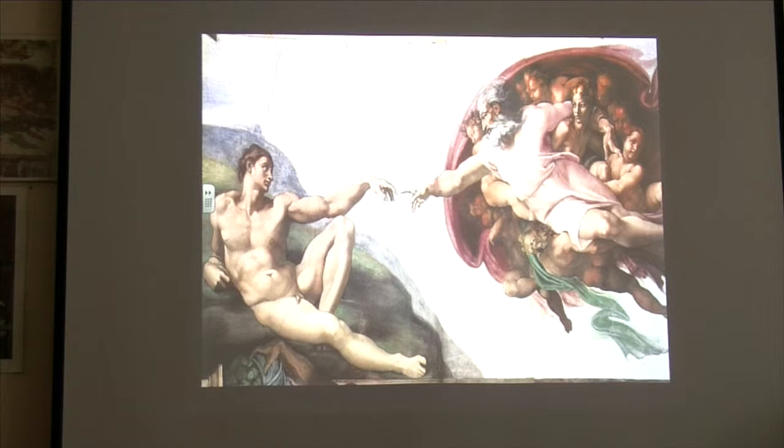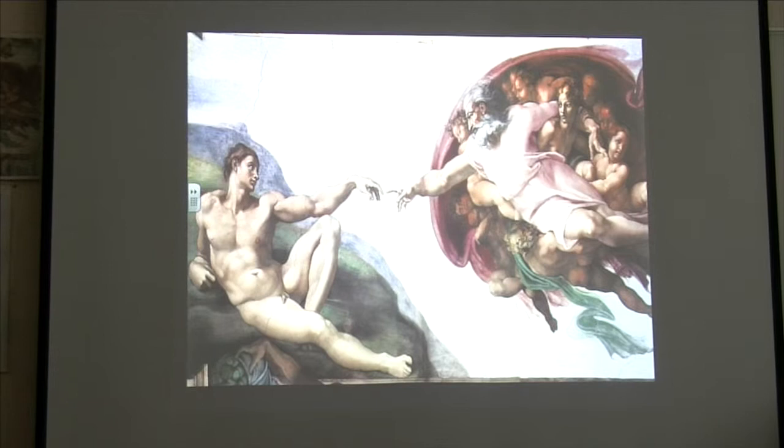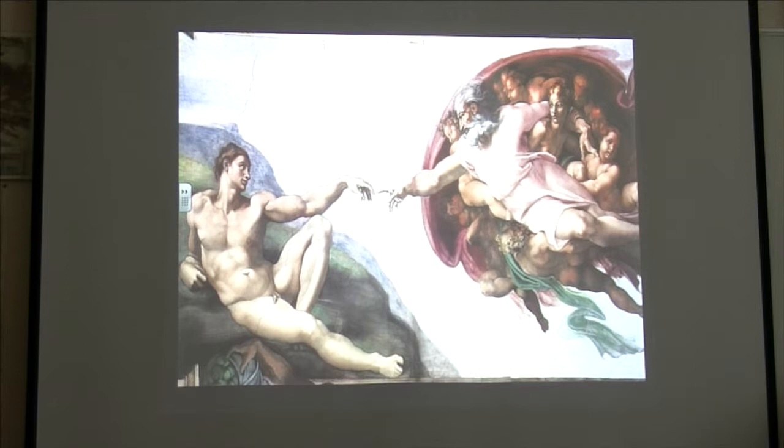The book of Genesis, which Michelangelo is trying to illustrate, has two different accounts in the first two chapters, written by different authors. The first one says: God said, 'Let us make man in our image, after our likeness,' and so God created man in his own image. There has been much speculation as to what this image might be.